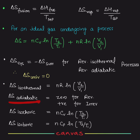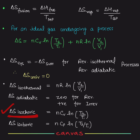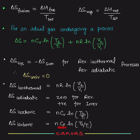Delta S adiabatic is zero for a reversible process, but positive for an irreversible process — that is the Second Law. Delta S isochoric equals nCv ln(T2/T1). For an isobaric process, Cp replaces Cv, so delta S isobaric equals nCp ln(T2/T1). Remember: isochoric uses Cv, isobaric uses Cp.